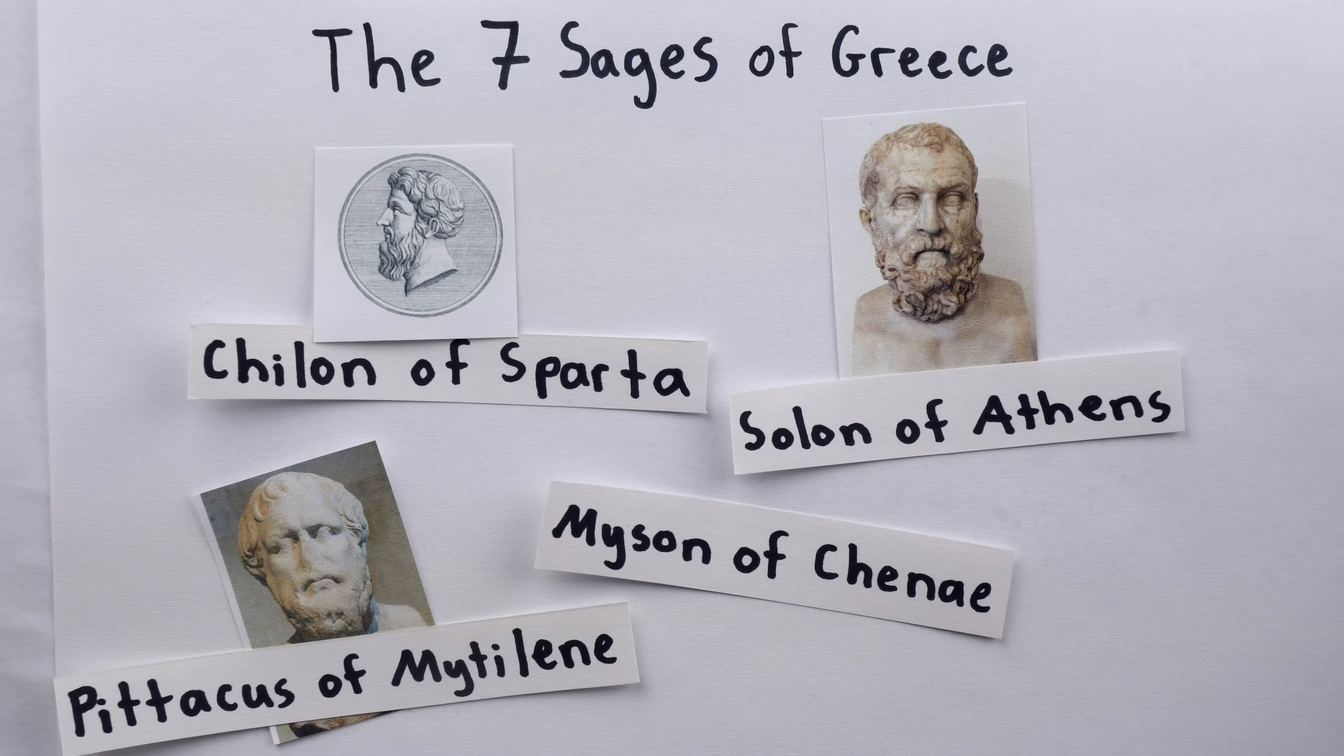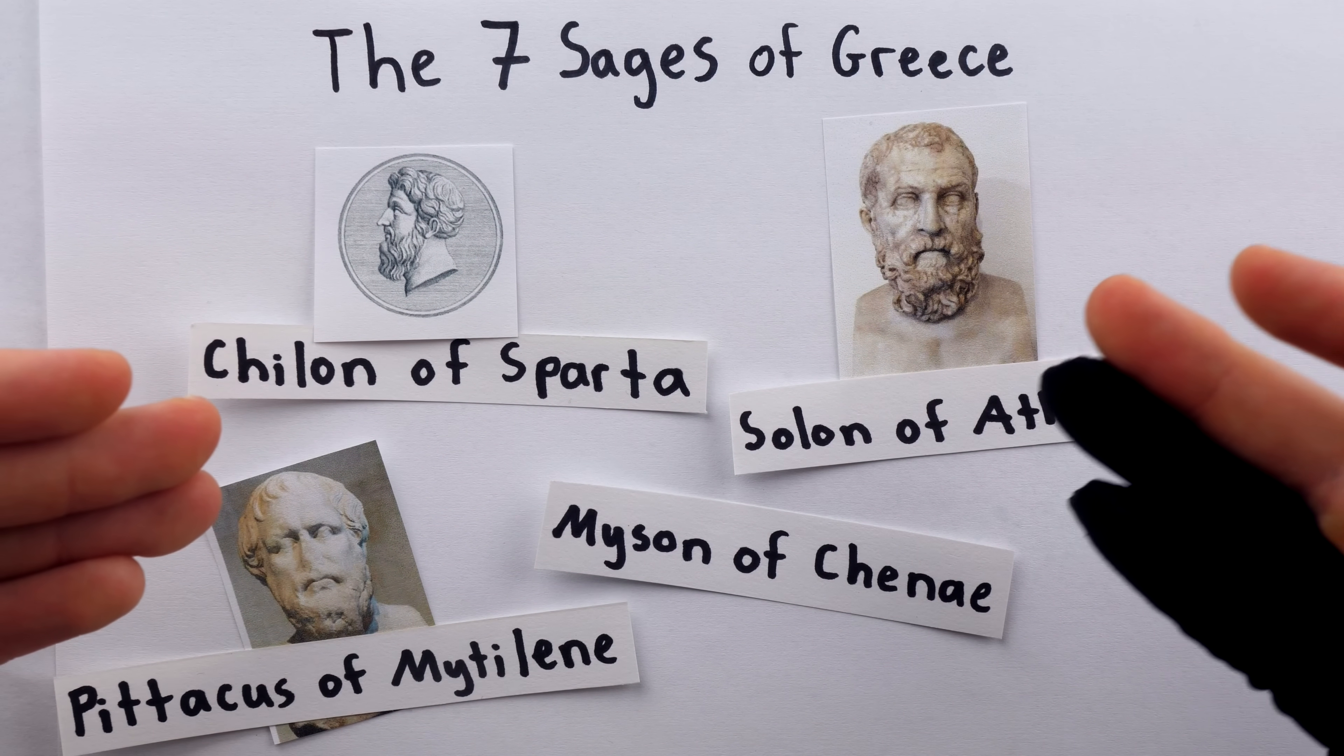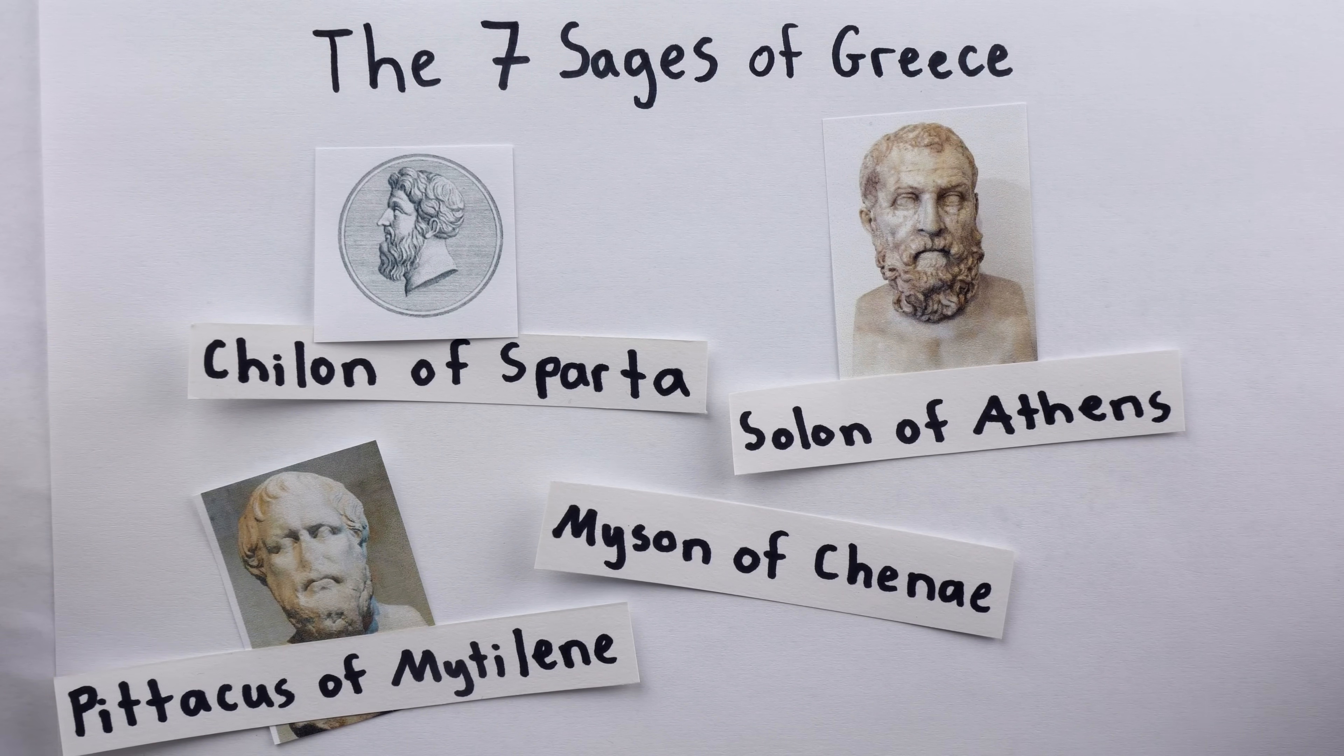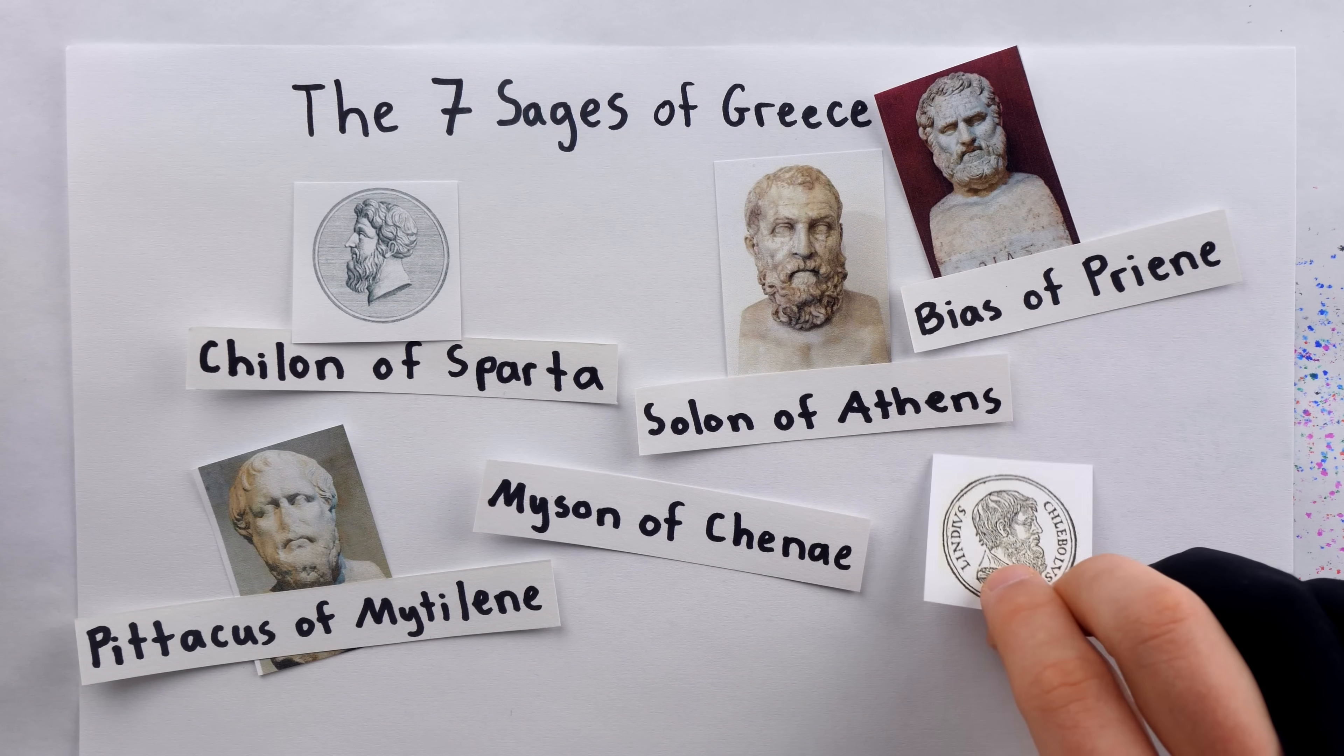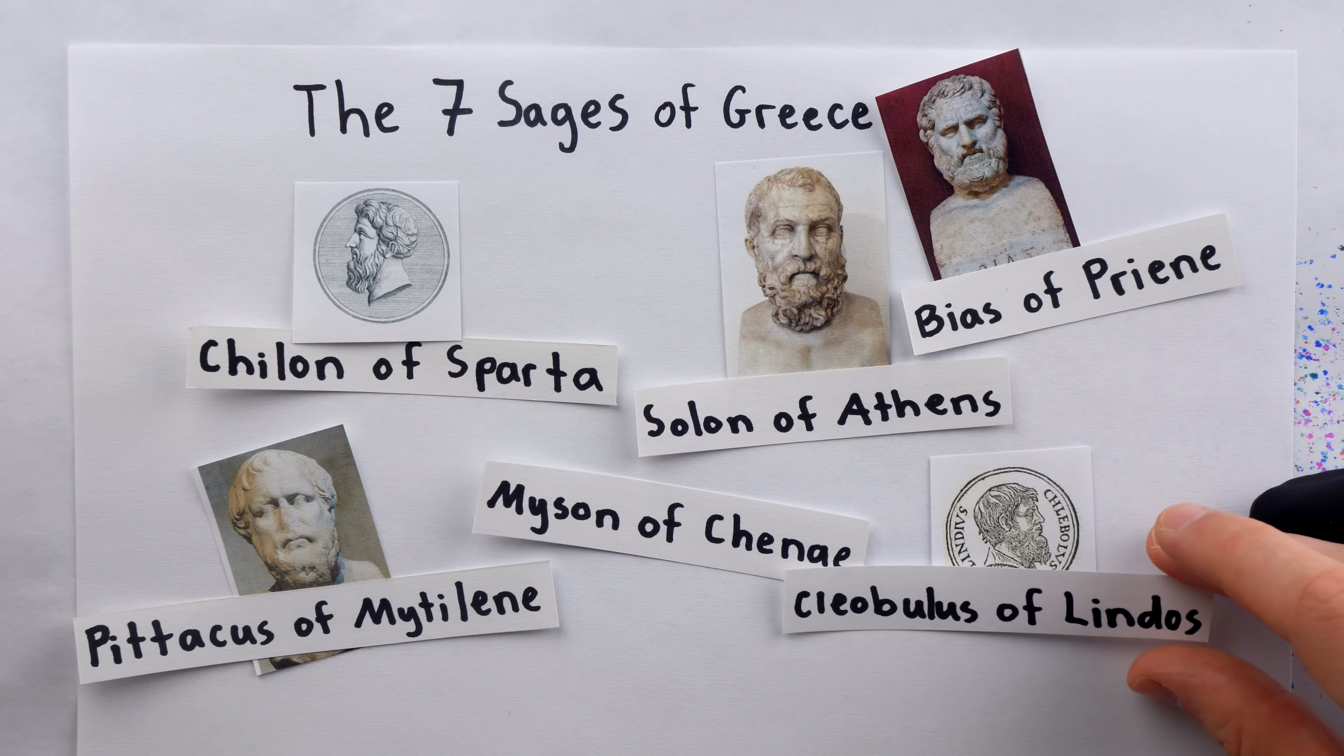Myson, who as yet hasn't done a face reveal, but if his peers give us anything to go off of, he probably looked like a rock. Also Bias of Priene, who was a politician, and Cleobulus of Lindos, who was a tyrant and poet.